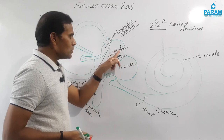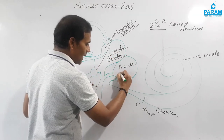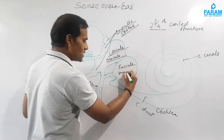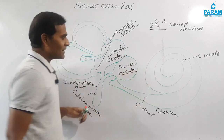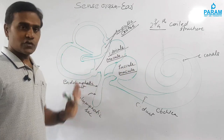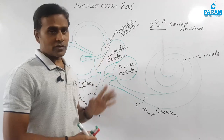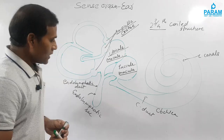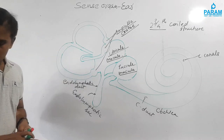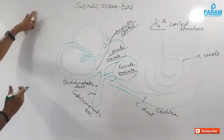Both the utricle and saccule each have one macula. These are sensory structures, meaning hair cells are associated with this macula and with the crista ampullaris. We will now look at how the structure of the macula is made.